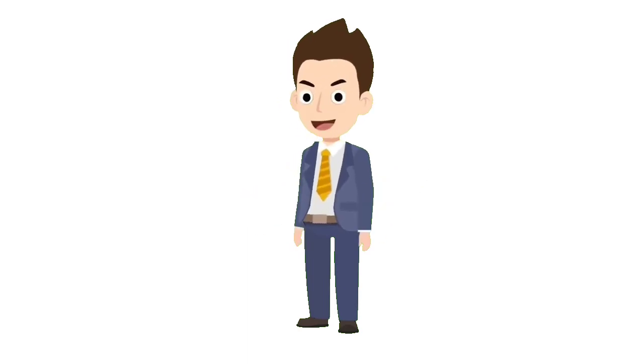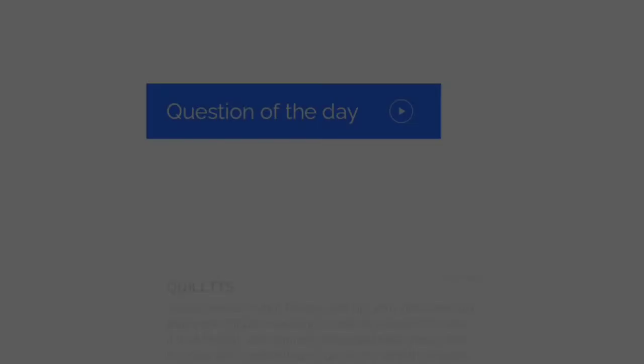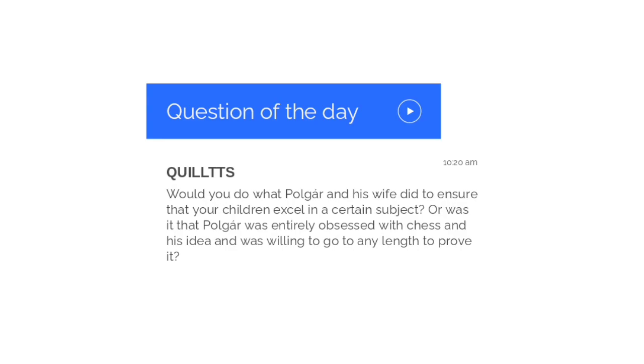The three phases of genius development are described by Ericsson as follows: Would you do what Polgár and his wife did so that your kids excel at a given discipline? Or was it that Polgár was utterly obsessed with chess and his theory and was prepared to go to extreme lengths to prove himself right? Please let us know your answer in the comment box.